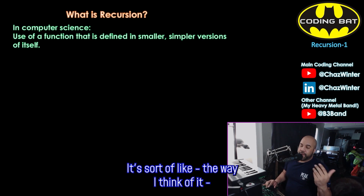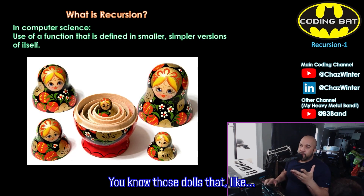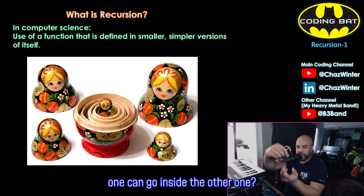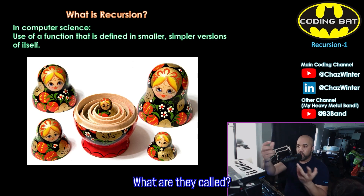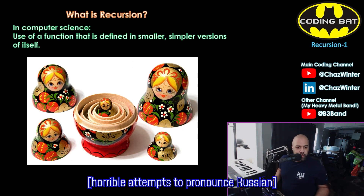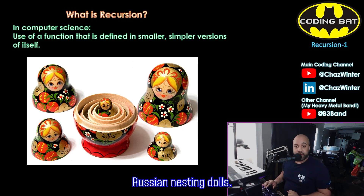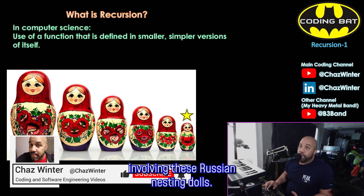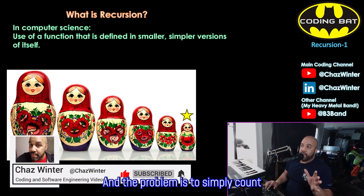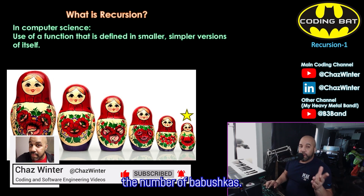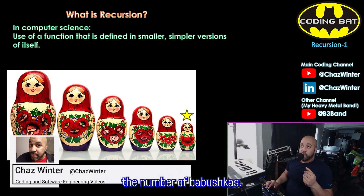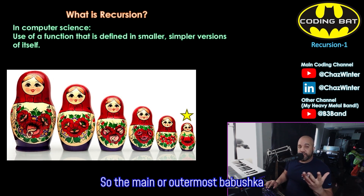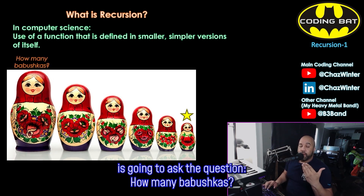It's sort of like — the way I think of it — you know those dolls where one can go inside the other? Russian nesting dolls. So I'm going to give you an example of a simple recursion problem involving these Russian nesting dolls, and the problem is to simply count the number of babushkas. So the main or outermost babushka is going to ask the question: how many babushkas?